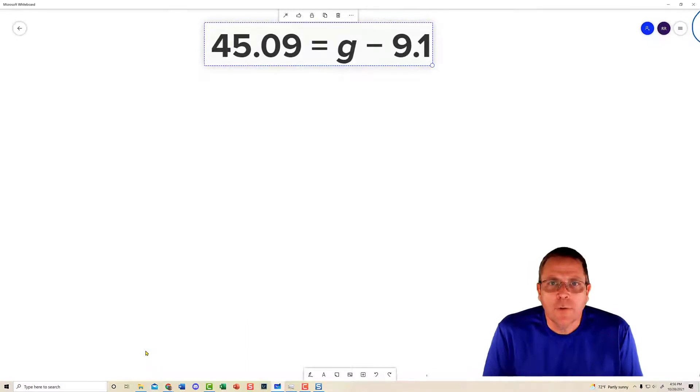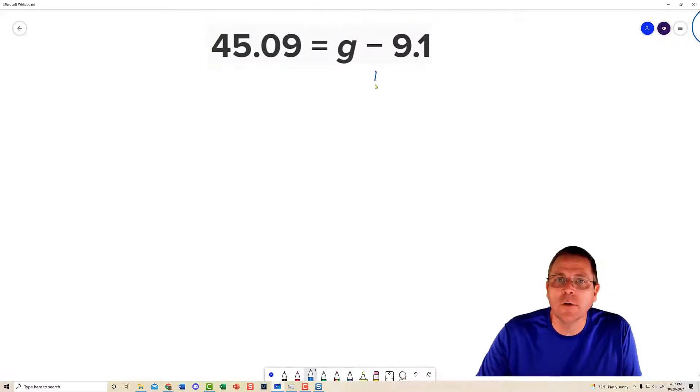Once again, the final goal of any equation is to isolate the variable. Our variable is g. Its friend is 9 and 1 tenth. And 9 and 1 tenth is subtracting itself from g. So how am I going to make 9 and 1 tenth go away? By using the addition property of an equation and adding 9 and 1 tenth to both sides. And it's going to look like this. Because I'm going to do it vertically. Just because it's so easy to do decimals vertically.